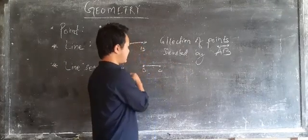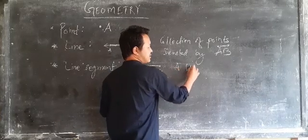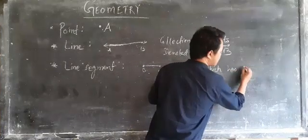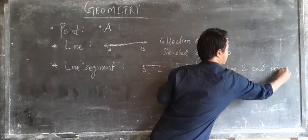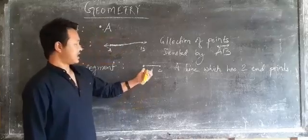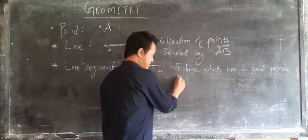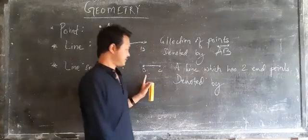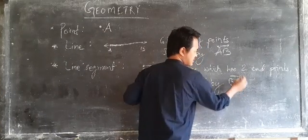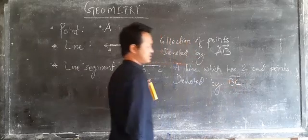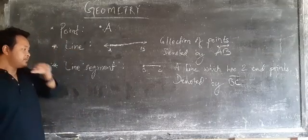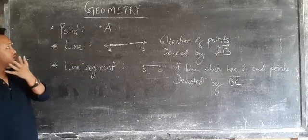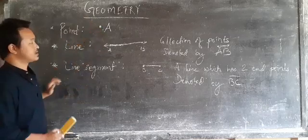So what we can say? A line segment is what? A line which has two end points and it is denoted by BC. This much. This is some basic with which we are going to do or understand geometry.